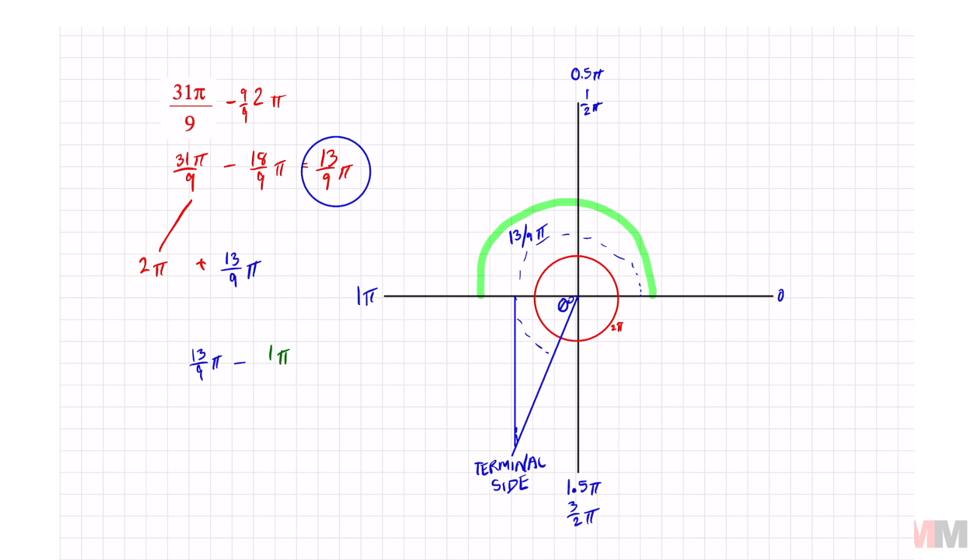Last fraction work from here. Multiply it by 9 over 9. I end up getting 13 over 9 π minus 9 over 9 π. And that just equals 13 minus 9, which is 4 over 9 π. There's my reference angle.